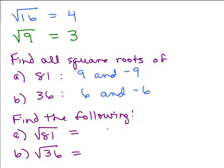But if instead the direction said, find the following, and I'm using that square root symbol, so this means the square root of 81, you would just pick 9, and the square root of 36 would just be 6. So it's a subtle difference,